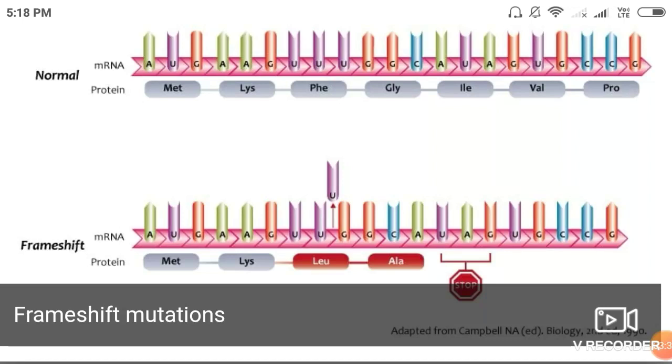This is all about frameshift mutation. Frameshift mutation is generally the addition or deletion of nucleotide bases in the reading frame. When you add or delete a nucleotide base, it alters the complete reading frame and results in a stop codon, which stops the translation process and results in a truncated protein that is no longer required by the body.